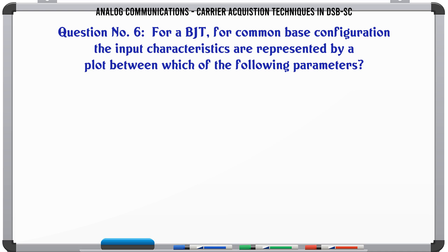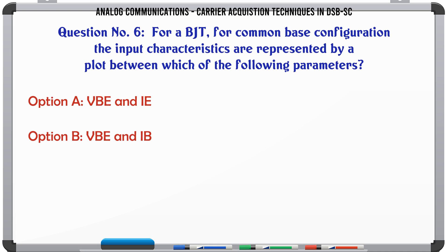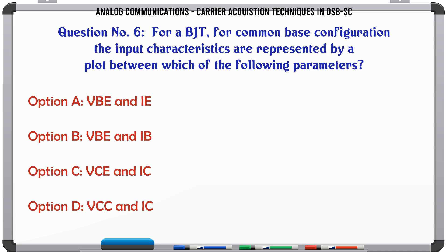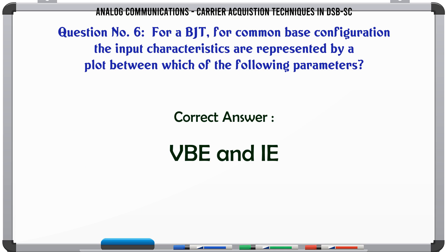For a BJT in common base configuration, the input characteristics are represented by a plot between which of the following parameters? A. VBE and IE. B. VBE and IB. C. VCE and IEC. D. VCC and IEC. The correct answer is VBE and IE.